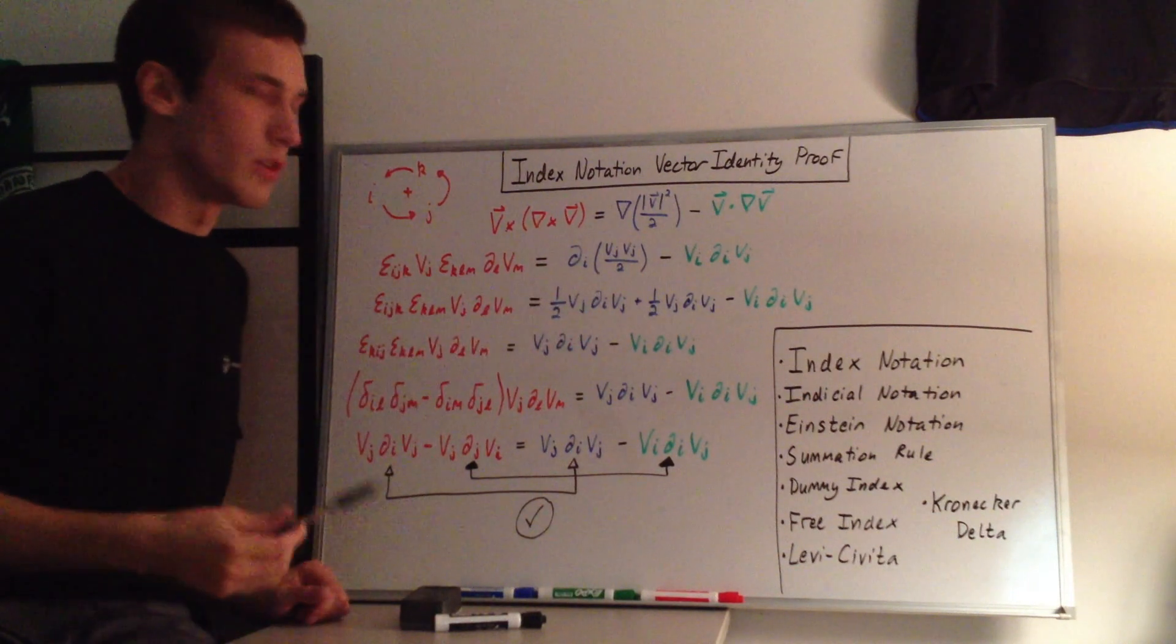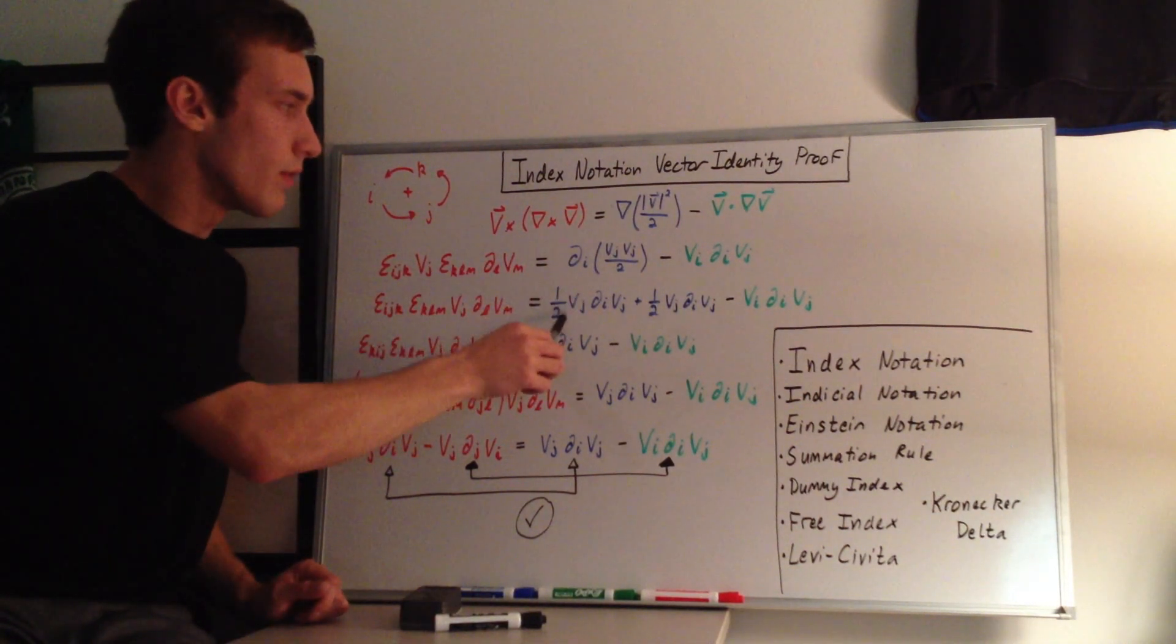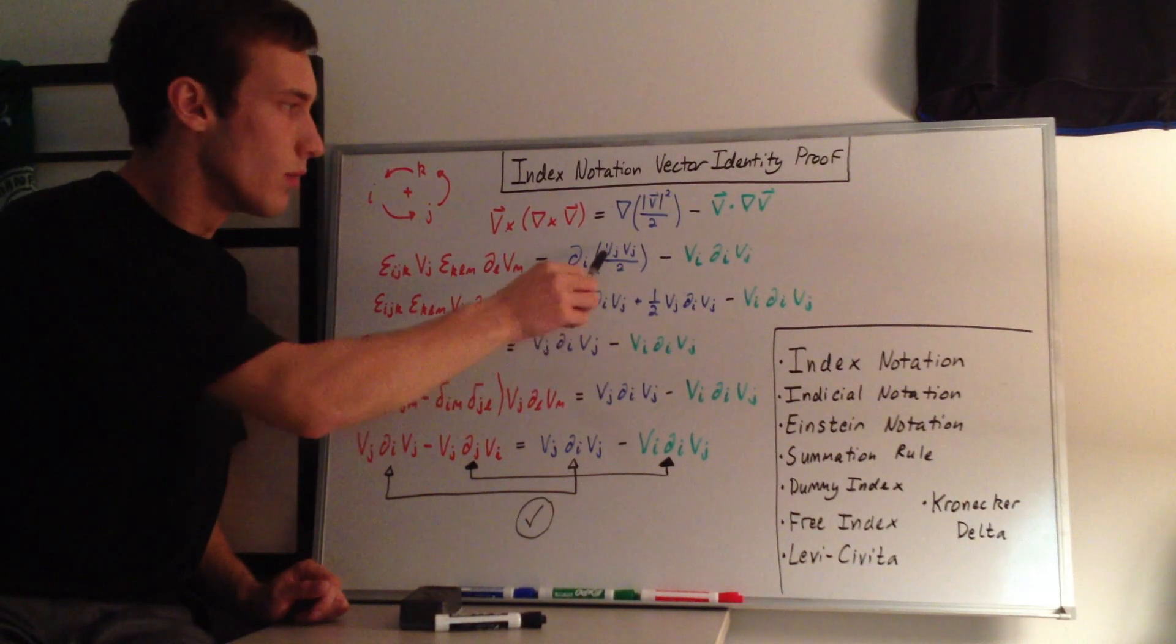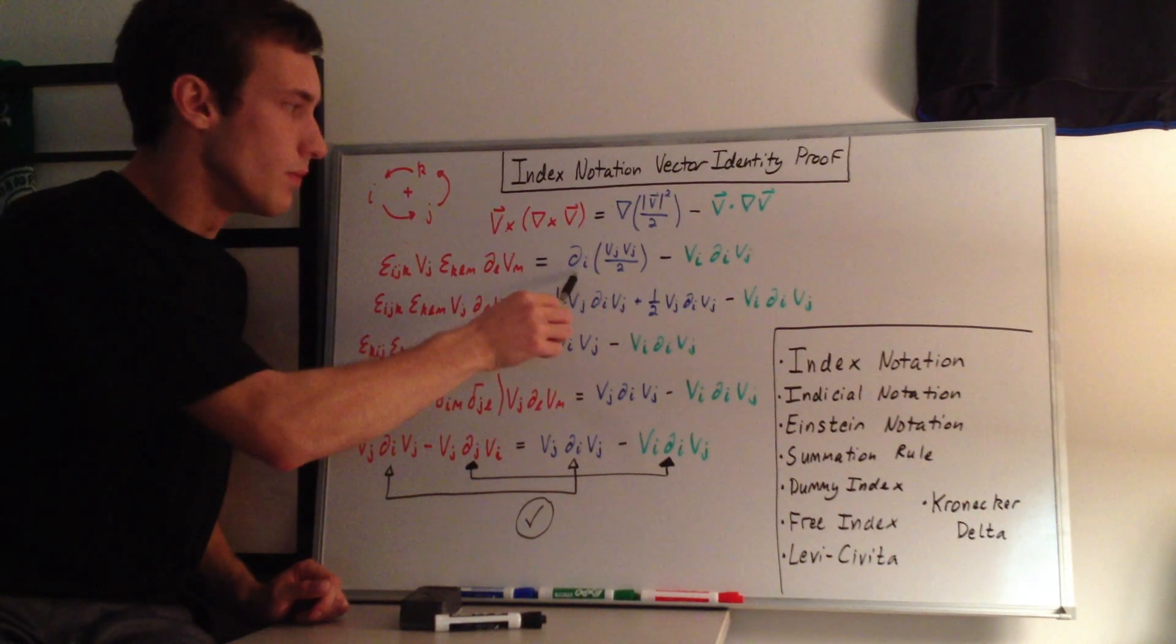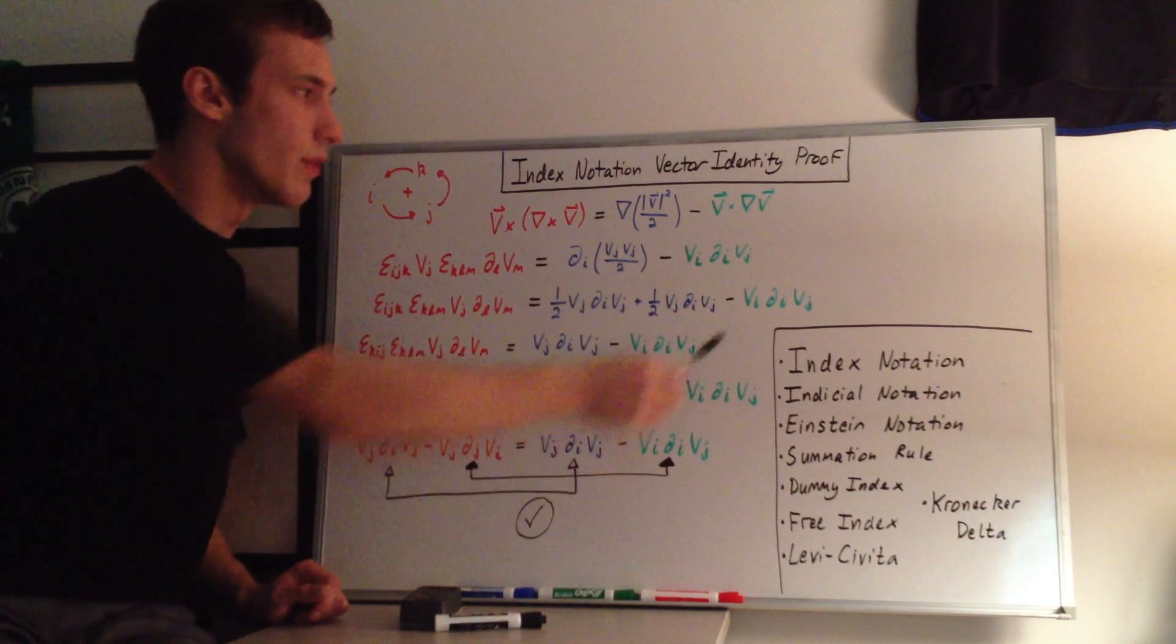This one, I just took essentially a chain rule kind of operation here. And so we have one half, and then v_j, one of these v_j's comes out. Then we have d_i, v_j. And then the same thing here. It ends up being the same thing. And then again, this stays the same.